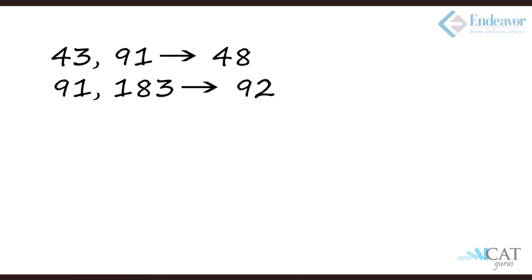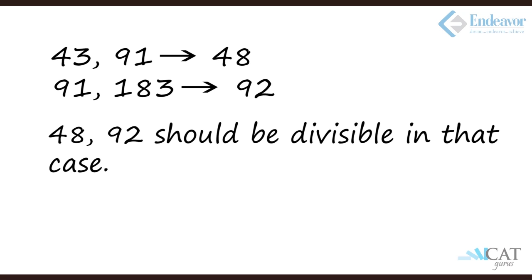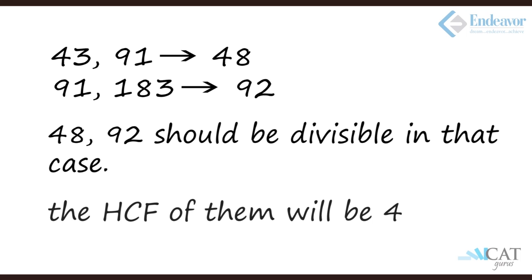If we find the difference of these three set of numbers, it will give us a product of the number or a multiple of that number which is dividing. So let's take the first case 43 and 91. The difference is 48. In the second case, the difference is 92. So 48 and 92 are exactly divisible by the number in consideration here. So what is the HCF of 48 and 92? The HCF is 4. So that gives us the answer. 4 is the number which divides 43, 91, and 183 to leave the same remainder.